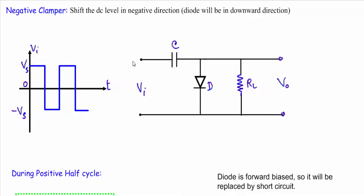In this video I will talk about negative clamper circuit. A negative clamper circuit is that circuit which will shift the DC level of any alternating signal in a downward or negative direction, therefore that circuit is known as negative clamper circuit. The negative clamper circuit will also contain a capacitor, diode, and the load resistor RL, but in case of negative clamper the diode will be in the downward direction.